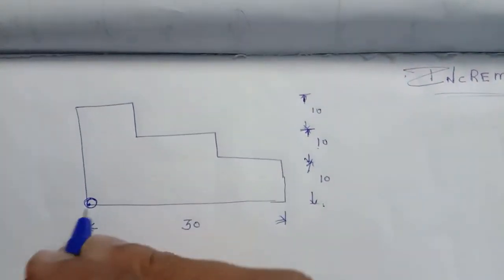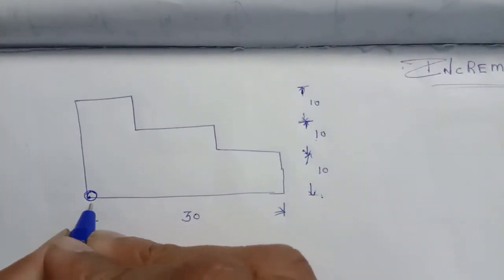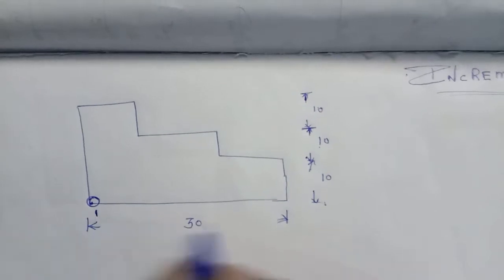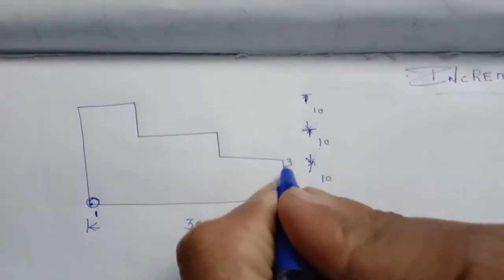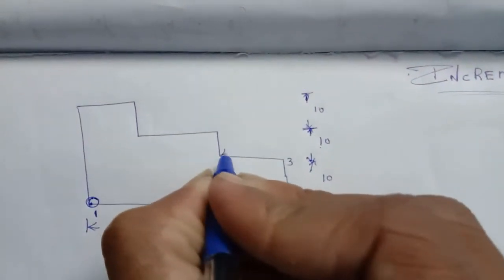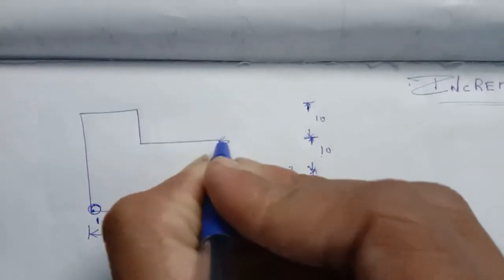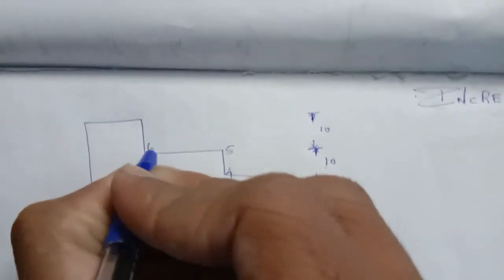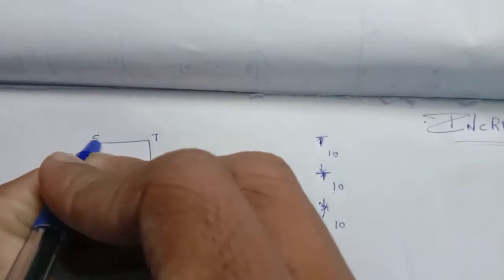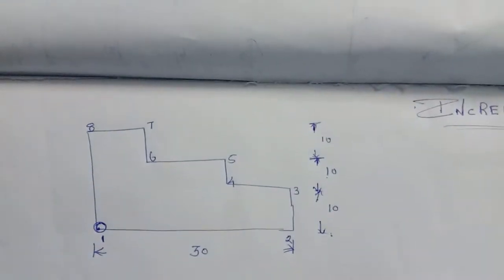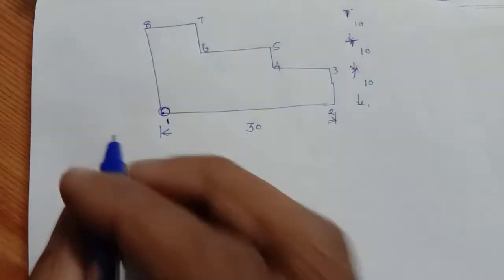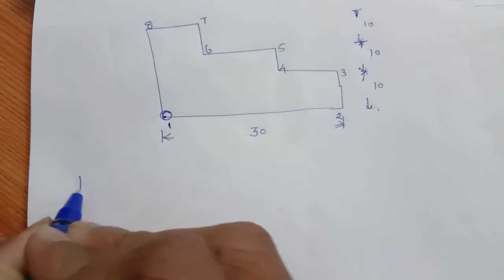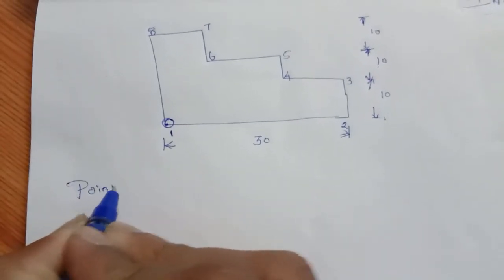Now, points note. This is point 1, this is point 2, this is point 3. This is the 5th, 6th, 7th, 8th. 8 points noted. You can get the points.